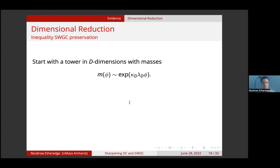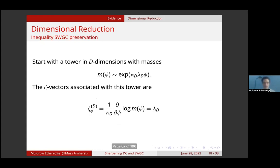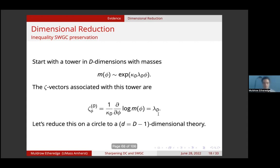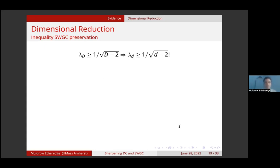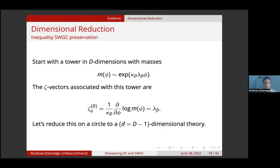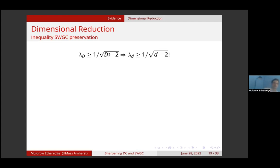Let me show you this point: start with a tower in capital D dimensions with masses scaling exponentially with modulus phi. The zeta vectors associated with this tower have just one component — the phi component — and it's just lambda sub D. If we reduce on a circle to get a lowercase d dimensional theory, it turns out that if lambda_D is greater than or equal to 1 over square root of D minus 2, then lambda_d in the lower dimensional theory will be greater than or equal to 1 over square root of d minus 2. This inequality is saturated when the higher-dimensional inequality is saturated.